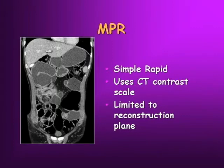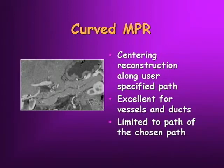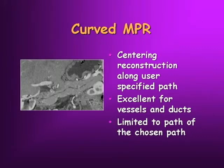Going through the different types of algorithms: multi-planar reformat is simple, uses the CT contrast scale, obviously limited to the reconstruction planes. There are papers coming out next month about the value of direct coronal imaging. You can prescribe a preset plane, have the tech knock off a set of coronal images in any plane or slice thickness, but that doesn't totally leverage the full value of your scanner. We can use a curved MPR — we can center the reconstruction along any plane and lay out a tubular structure or vessel. This is particularly good for looking at stenoses, especially in the iliacs and on peripheral CTA.